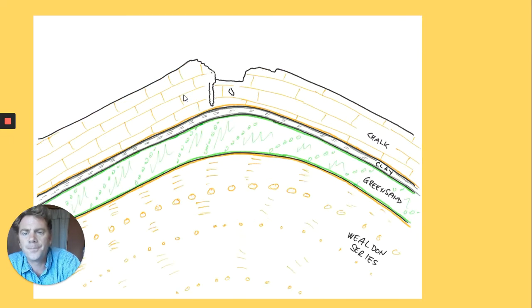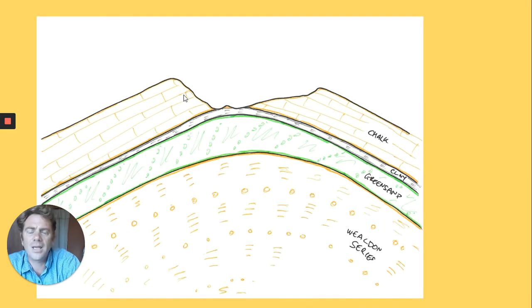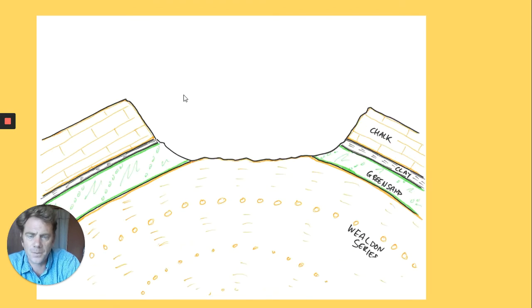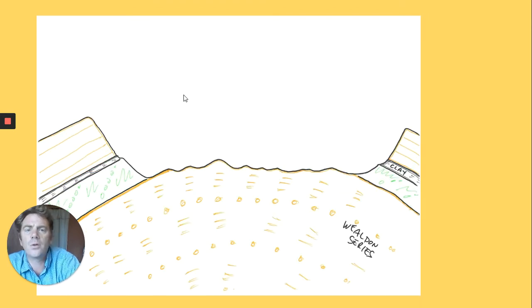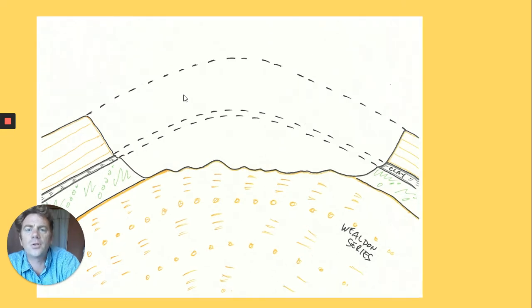But the minute it gets through to the clay, the clay is going to erode very rapidly. So too is the green sand. So coming up is one of those classic cross sections they might ask you to draw. This is a geological cross section of an anticline.